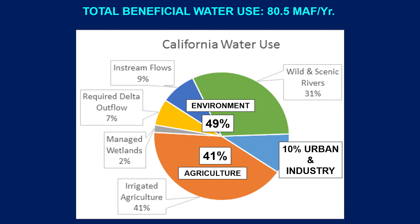Thank you for your attention. On the question of what research is being done on deficit irrigation: there are studies done in California, and also recent research conducted in Spain, southern Italy, and Australia, providing several useful studies that can be adopted.